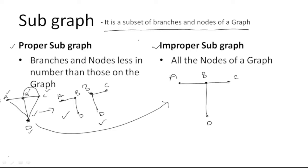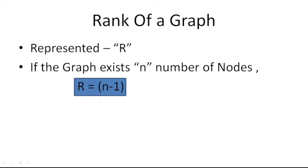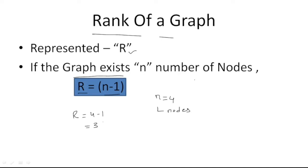The rank of a graph is represented by the letter R. If the graph has n number of nodes, then the rank of the graph is given by R = n − 1. For example, if the number of nodes n = 4, then the rank of the graph is 4 − 1 = 3.